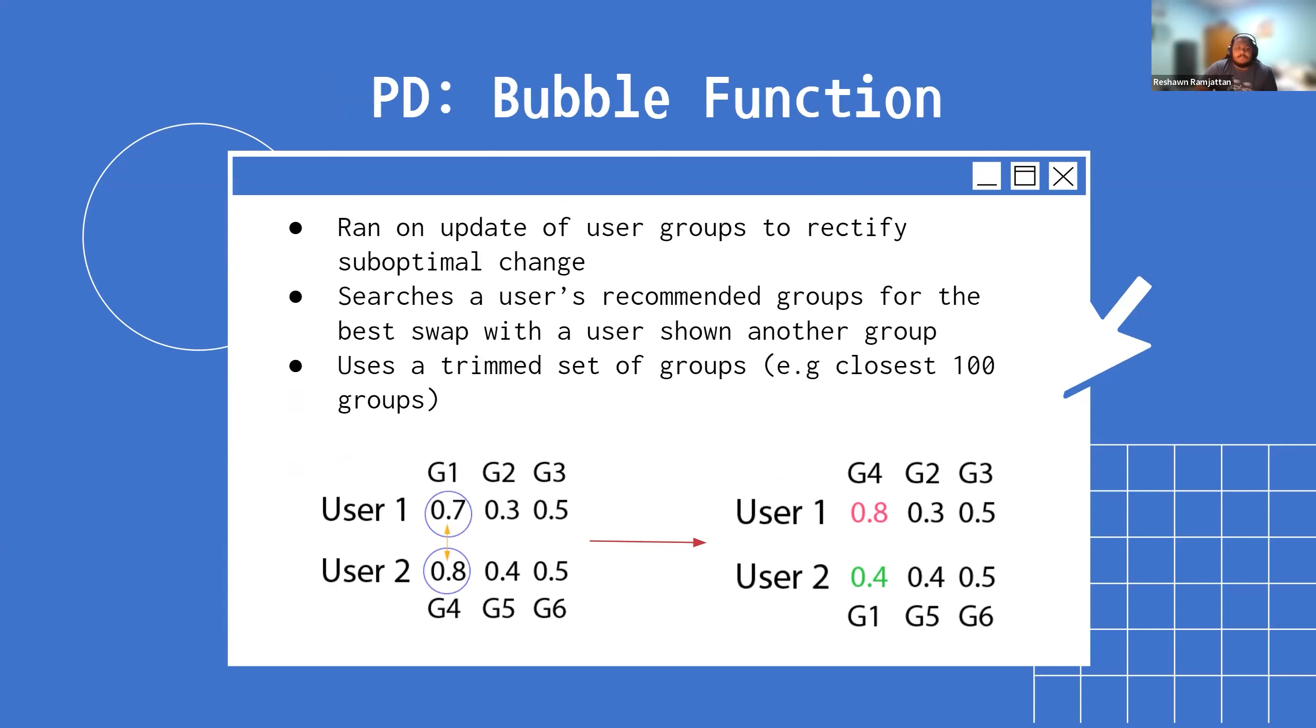Immediately after that we run something called the bubble function. This is what's focused on improving matchmaking quality, and it does this by searching a user's recommended groups for the best swap with a user that's seeing another group. For example, let's say user one is seeing group one and user two is seeing group four. These are the values representing the quality of the match. But if we swap those two users, even though user one sees a worse match, user two sees a much better one, so the net difference is better for the overall system, which makes it a good swap, and the bubble function would make those swaps for the good of the overall system.